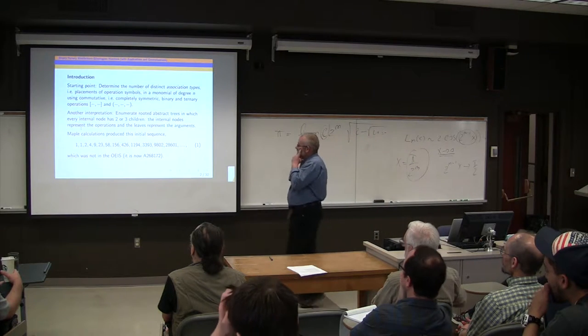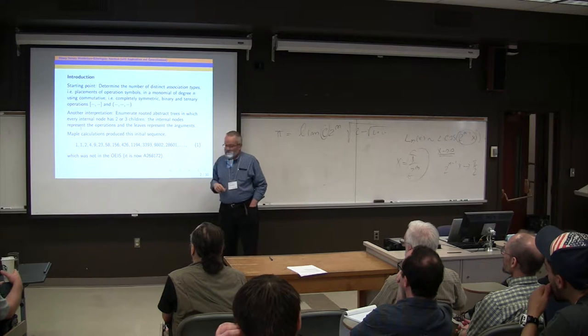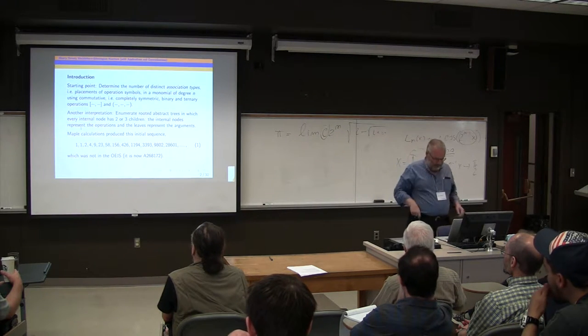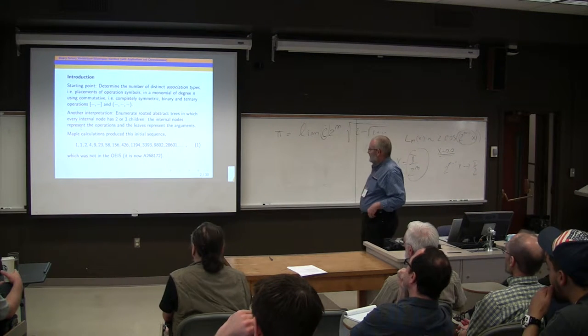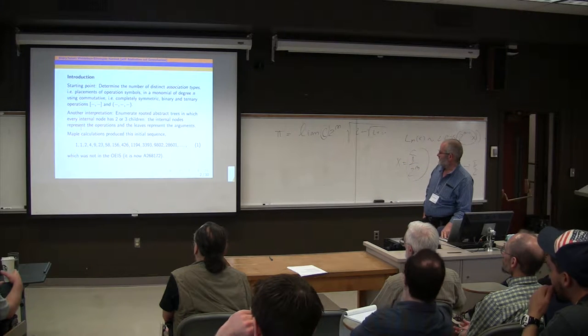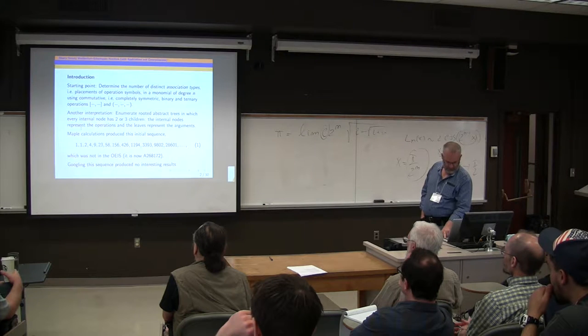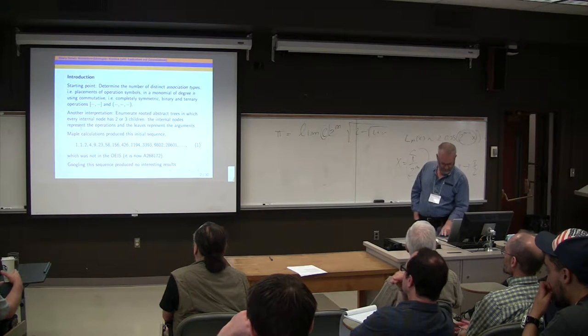The internal nodes represent the operations and the leaves represent the arguments in the monomial. So in this particular problem, some maple calculations produced this initial sequence, which was not in the online encyclopedia. So I added it. It's now sequence 268172. And I did a Google search on the first few terms of that sequence, but it turned out not to produce anything particularly interesting.